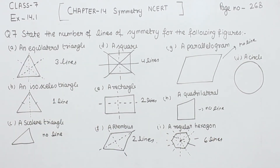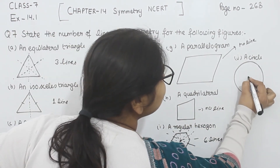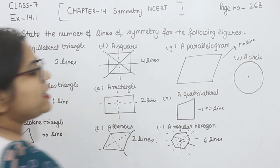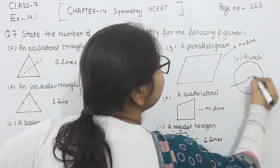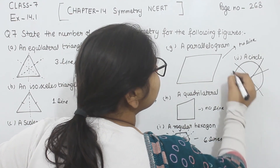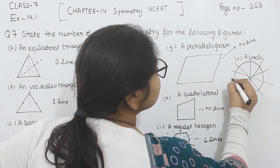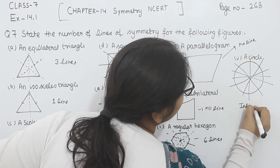Now, comes to part J — the circle. In this one, this is the center. From the center, we can pass any line through it. So in this circle, we can have infinite lines of symmetry — infinite.